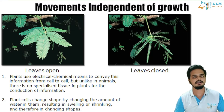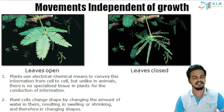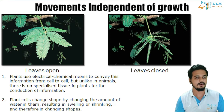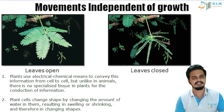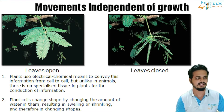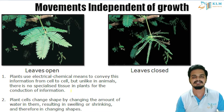First we will look into movements that are independent of growth. How do plants communicate internally — how do they communicate with all the cells inside the leaves? They also use electrical and chemical means, like us. However, unlike animals, plants do not have any specialized tissue for the conduction of information. Plants use electrical and chemical means to convey information from cell to cell, but there is no specialized nervous tissue in plants.